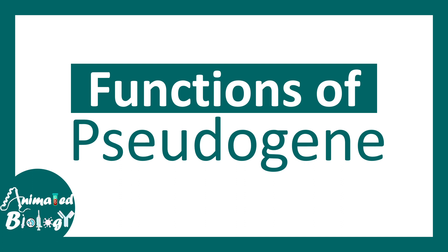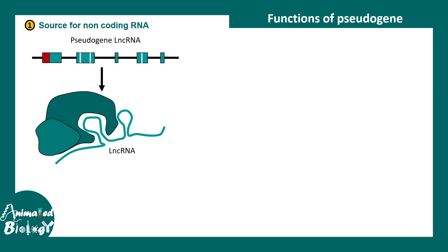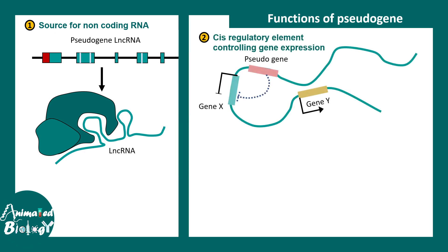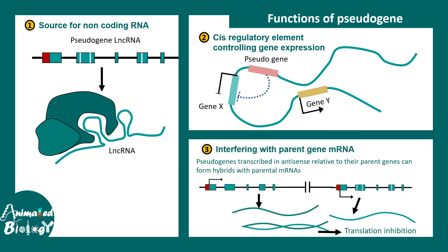Let's talk about the functional aspects of pseudogenes. Though initially pseudogenes were thought to be non-functional and just the outcome of some accident, that's not true — pseudogenes perform many functions. Pseudogenes could be a source for long non-coding RNA. They could regulate gene expression, and are known to repress many genes in the genome, functioning like a cis-regulatory element. Also, they can interfere with the parent mRNA: if a particular pseudogene is transcribed in the reverse direction, the antisense strand is transcribed and the sense and antisense strands can hybridize with each other, which sequesters the normal mRNA of that gene and prevents translation, thereby impeding the overall translation rate.